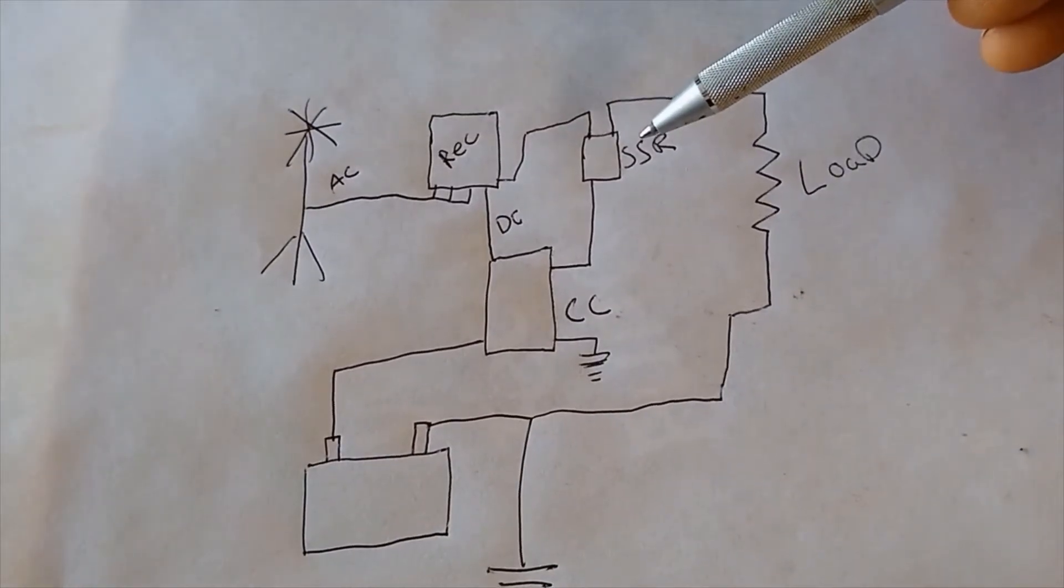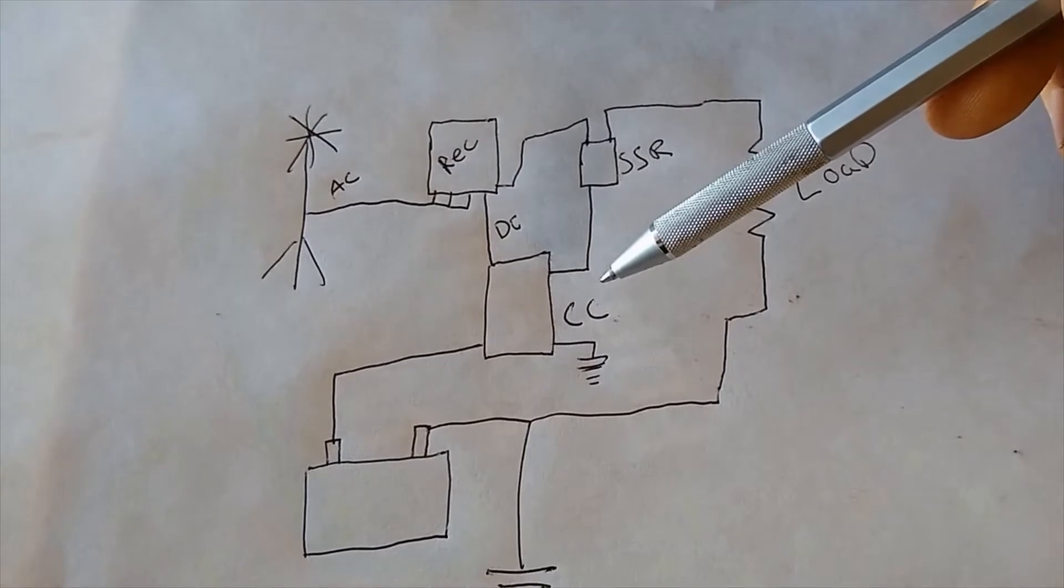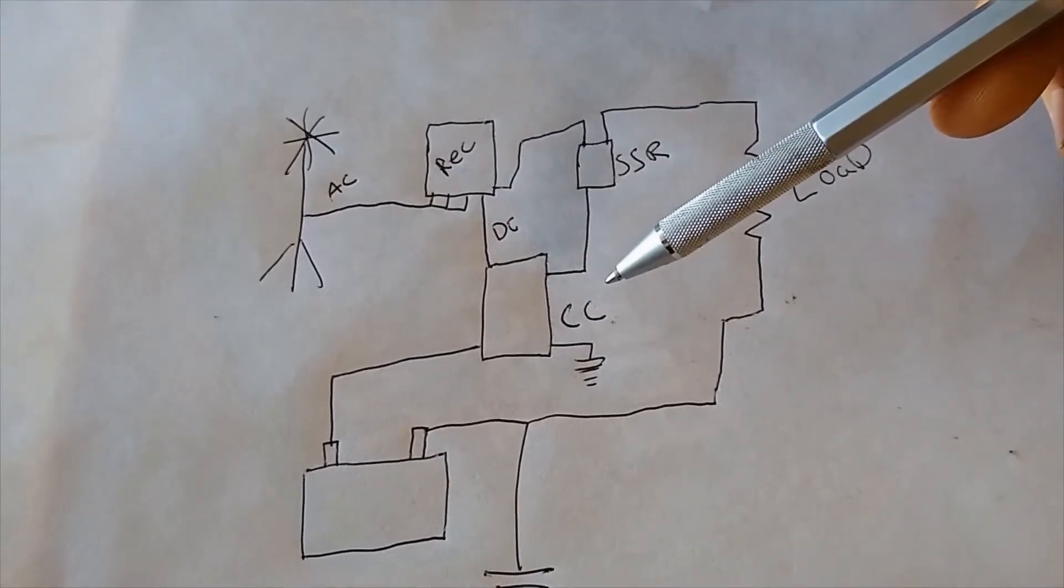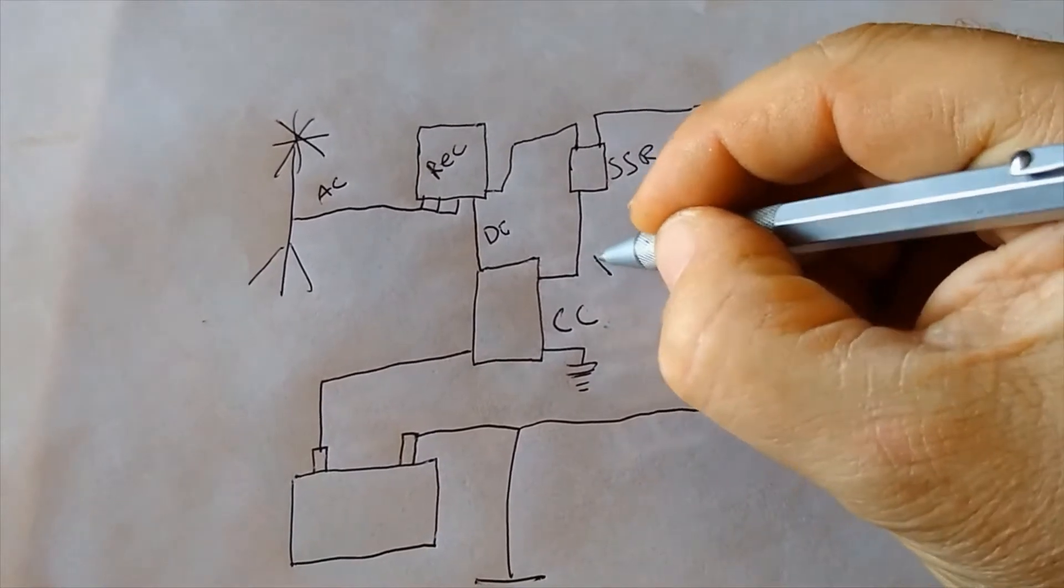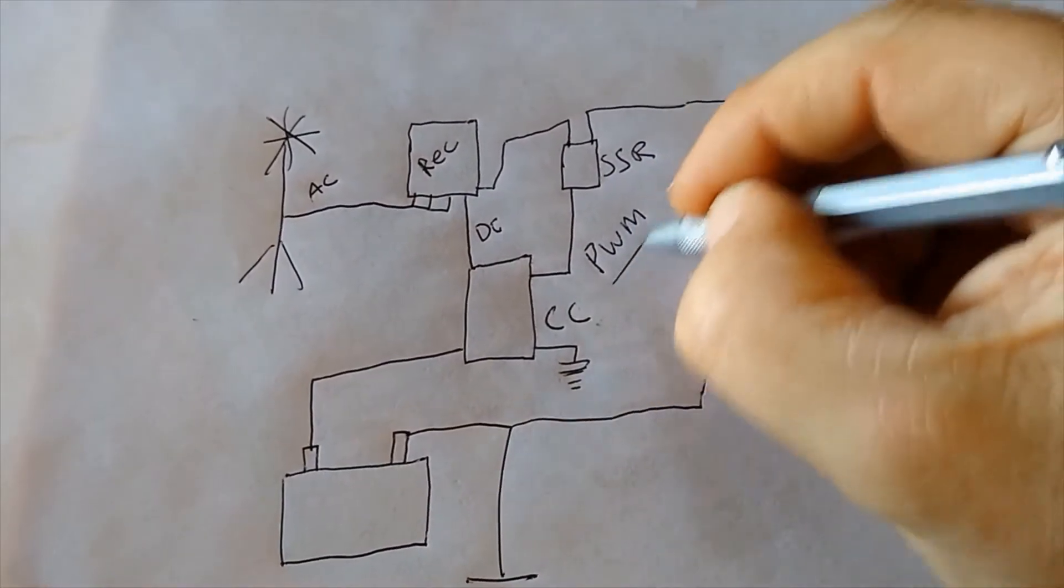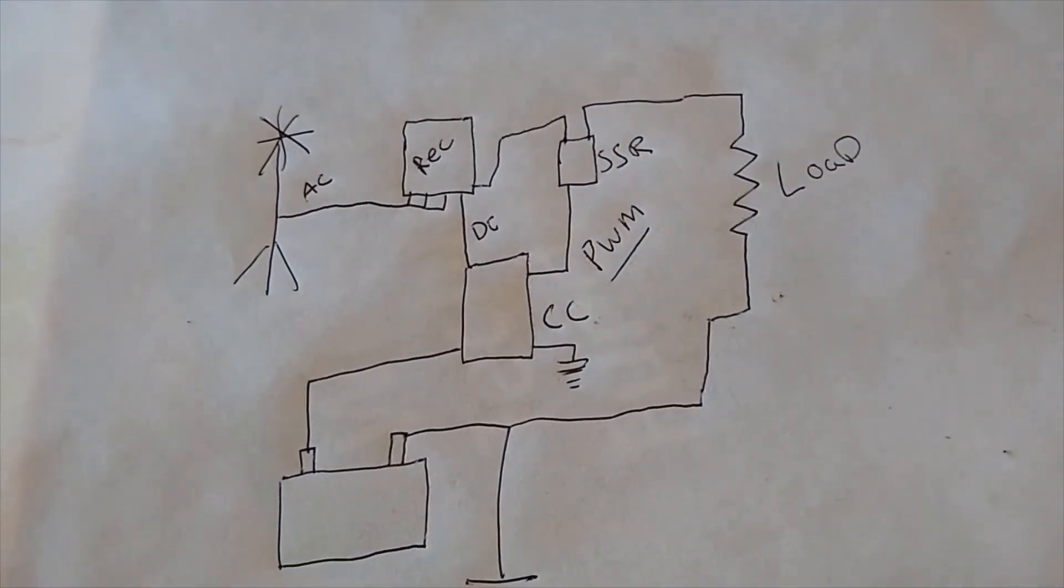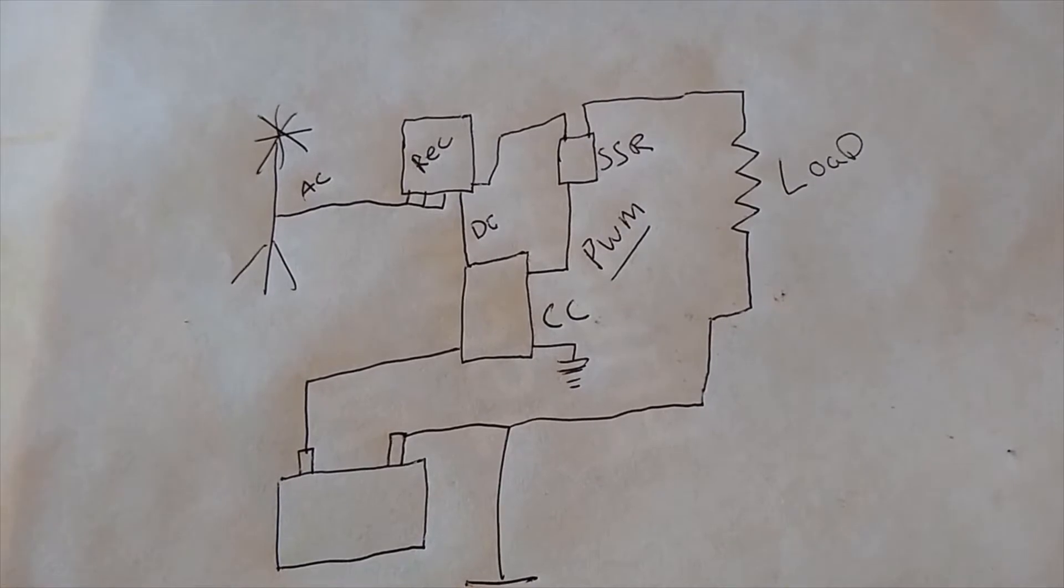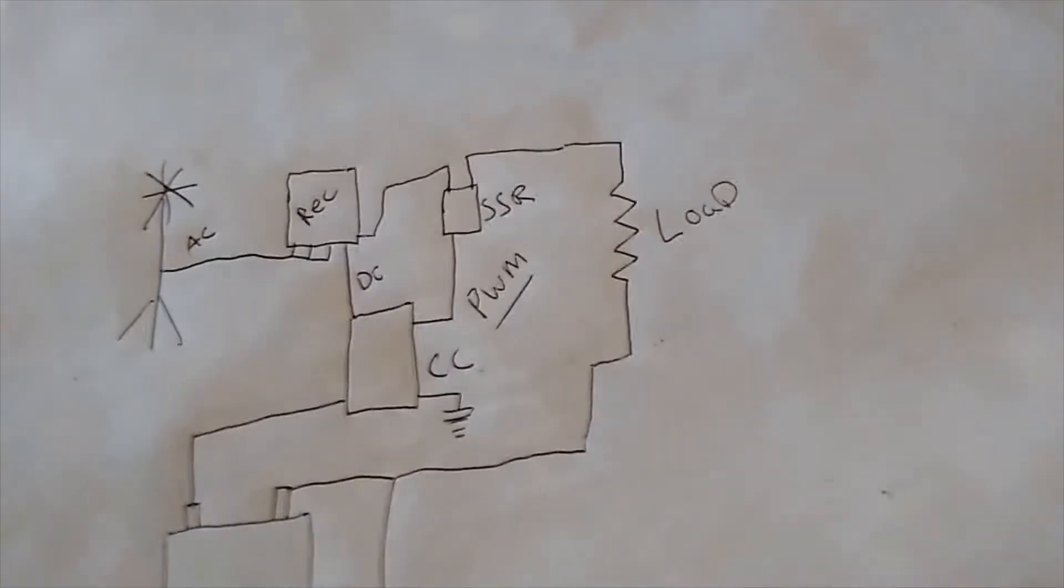So the solid-state relay gets that signal from the Midnight Classic charge controller, which is the only charge controller I have seen that can supply this PWM signal, which is pulse width modulation. The pulse width modulation is what does the trick here and that's what allows that solid-state relay to act more like a dimmer switch than a light switch or an on-off switch.